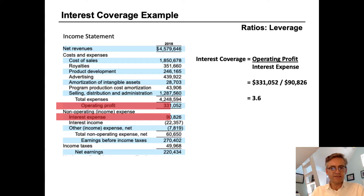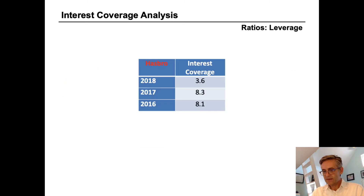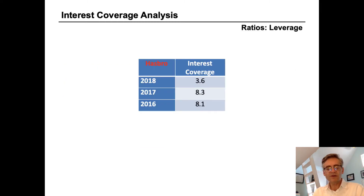Now the question is, is that good or bad? As analysts, how do we evaluate it? To evaluate an interest coverage ratio, it's best to look at a trend over time. And when we use horizontal analysis to compare the same ratio in prior years,